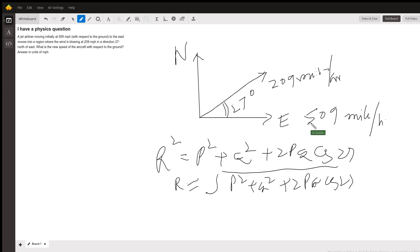So if I take the two vectors as 509 and 207 angle between the two being 27 degrees, I find the resultant by using the formula P square plus Q square plus twice PQ cos 27. P here is 509 miles per hour.